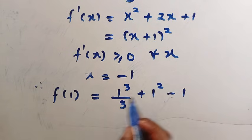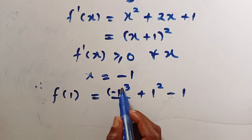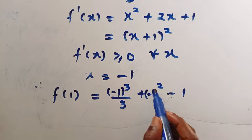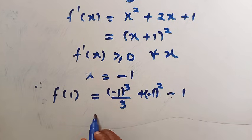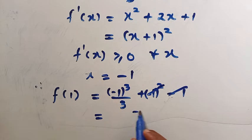minus 1 cubed, minus 1 squared, minus 1 squared, minus 1. So everything here gives us minus 1 divided by 3, which is f of 1.